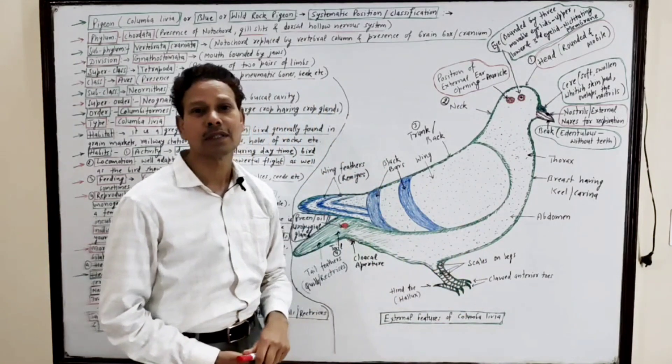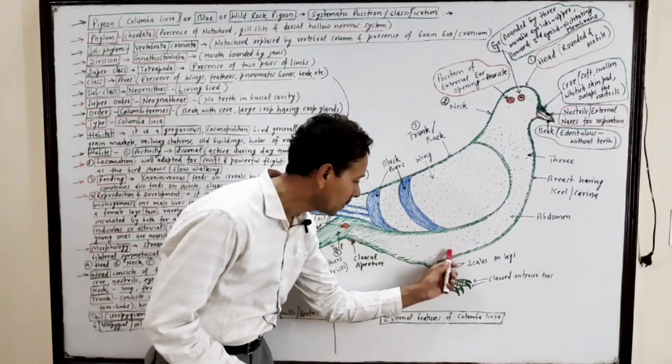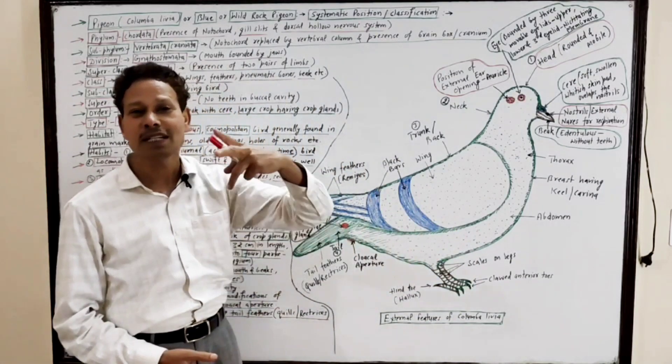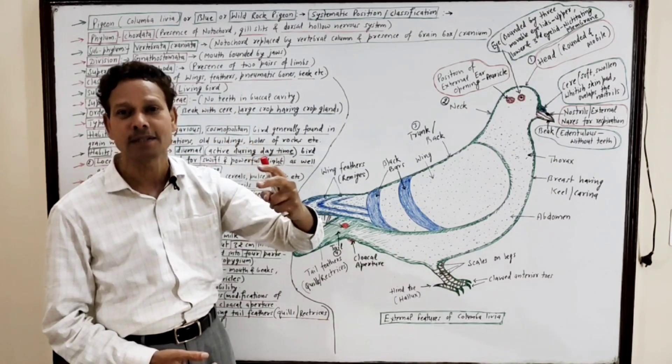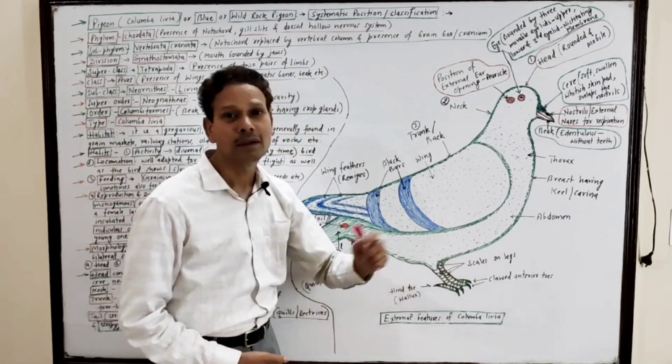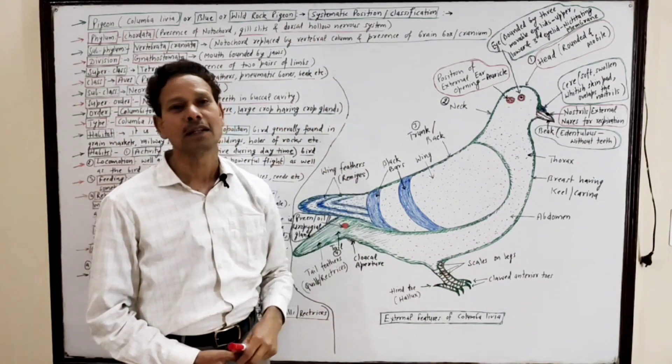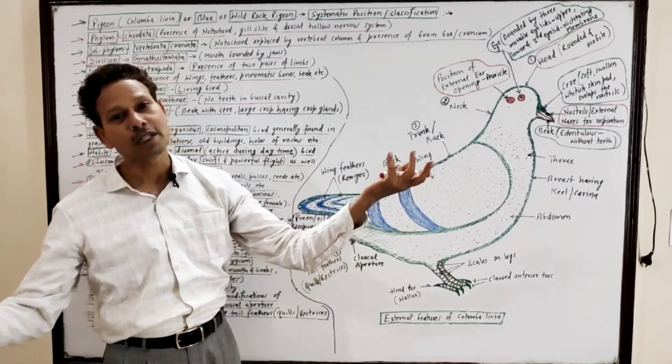On hind limbs, note down, the skin possesses scales only on legs. This means in case of birds the scales are only present over hind limbs, but in case of reptiles, in case of snakes, the entire body is covered with scales.